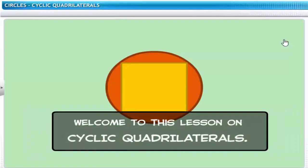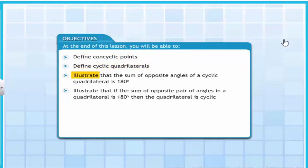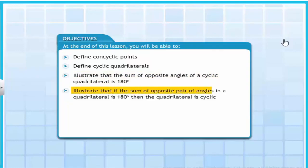Welcome to the lesson on cyclic quadrilaterals. At the end of this lesson, you will be able to define concyclic points and cyclic quadrilaterals. You will be able to illustrate that the sum of opposite angles of a cyclic quadrilateral is 180 degrees. You will also be able to illustrate that if the sum of an opposite pair of angles in a quadrilateral is 180 degrees, then the quadrilateral is cyclic.